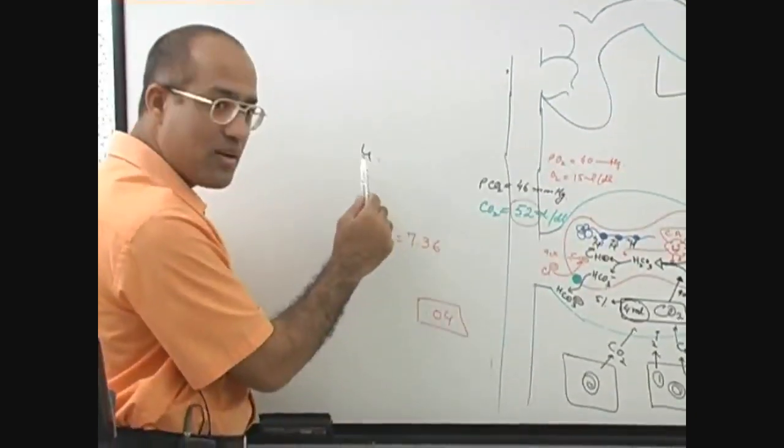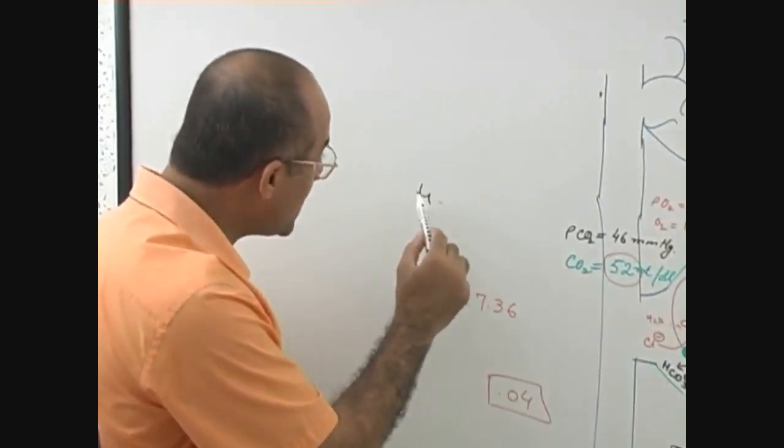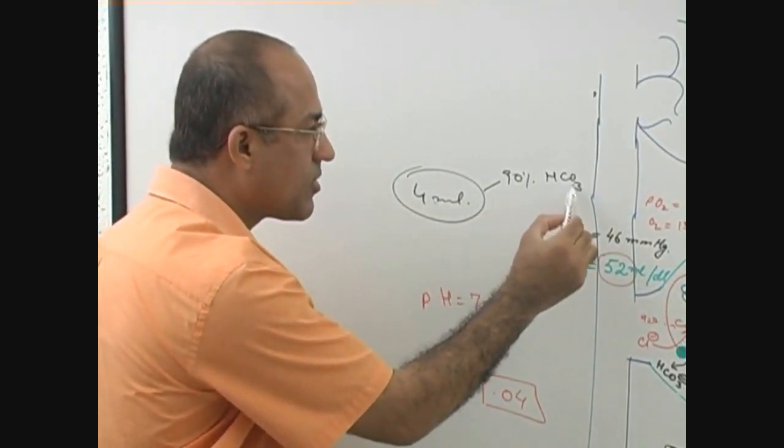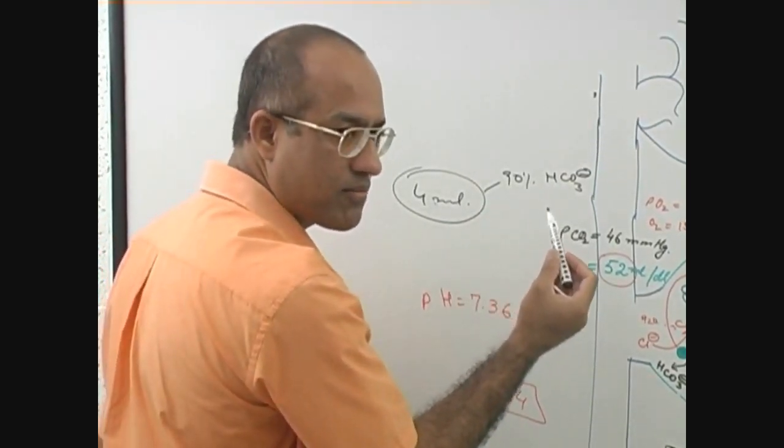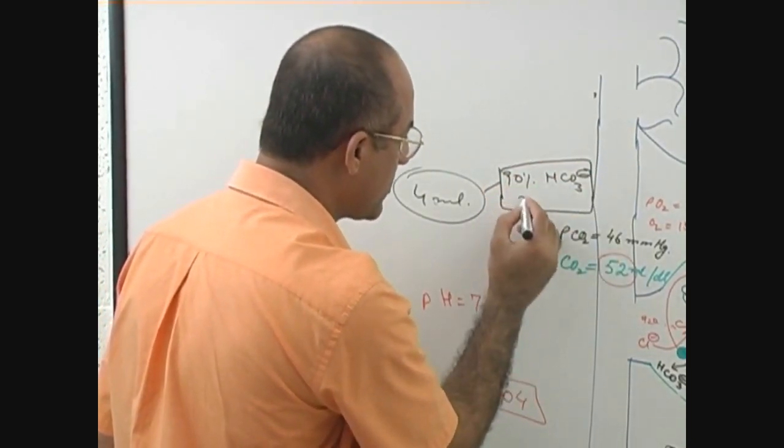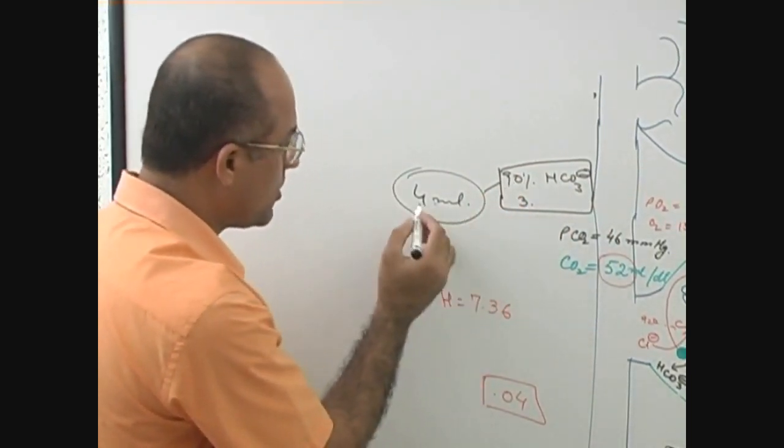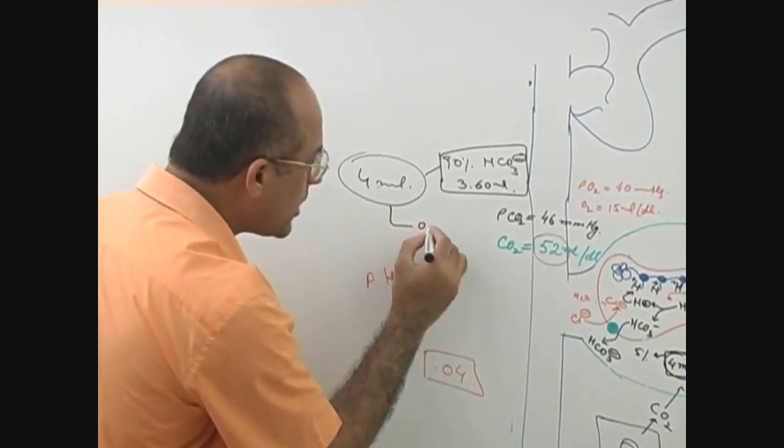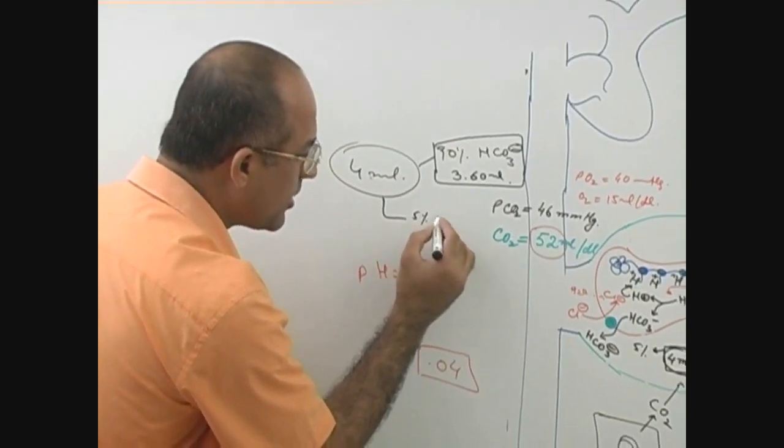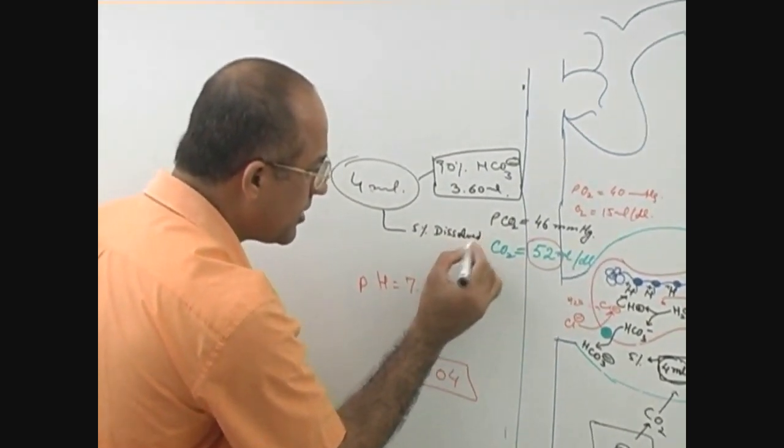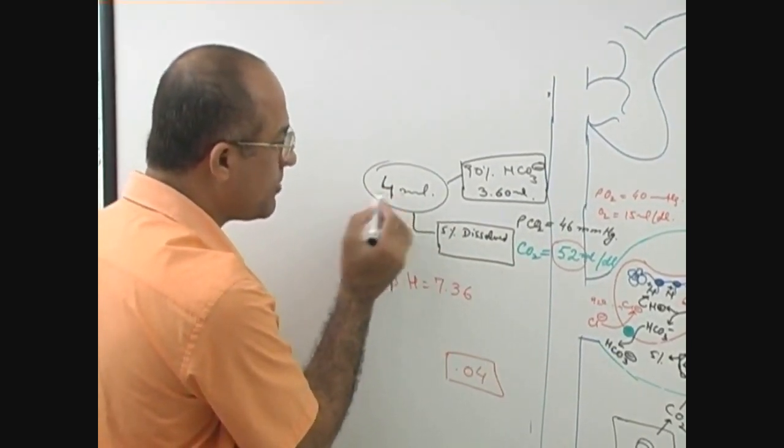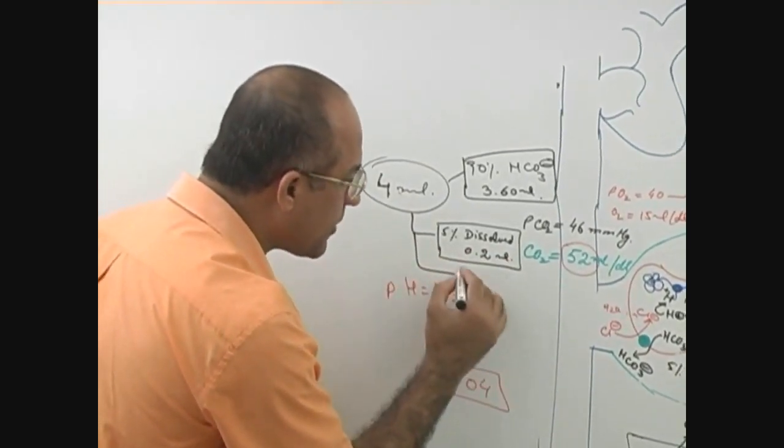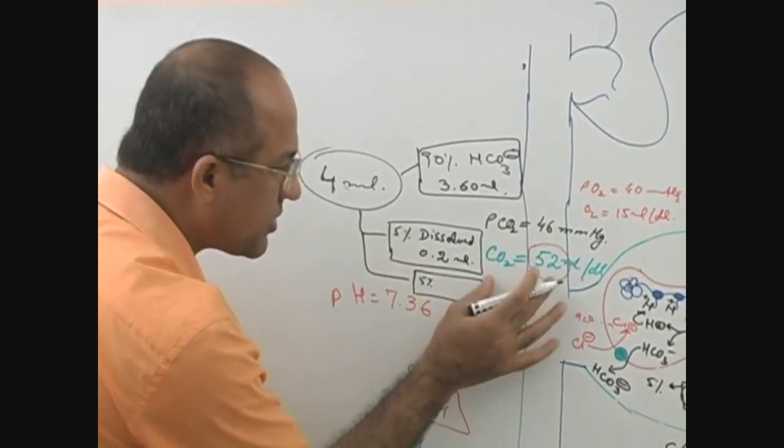If you have 4 ml carbon dioxide, out of that 90% is as bicarbonate. 90% bicarbonate means out of 4 ml, how much is 90%? 3.6 ml is going as bicarbonate. And about 0.2 ml, that is 5%, is present as dissolved form. 5% of carbon dioxide in dissolved form—what is 5% of 4 ml? Approximately 0.2 ml.